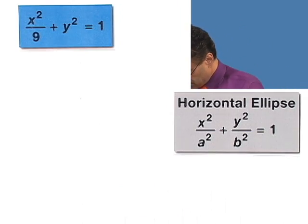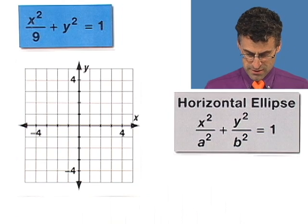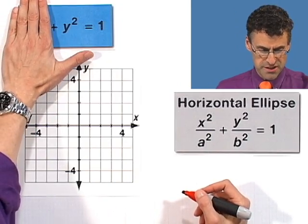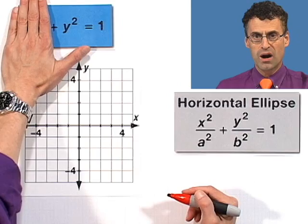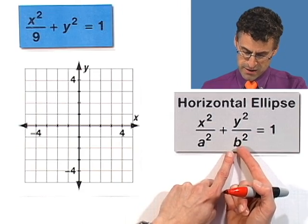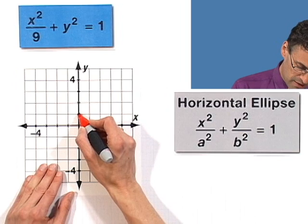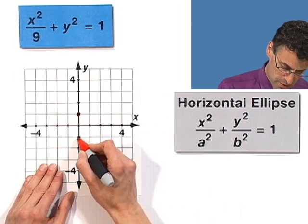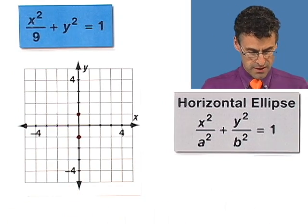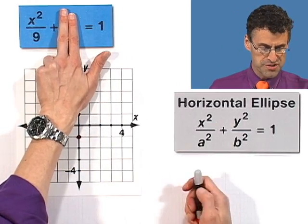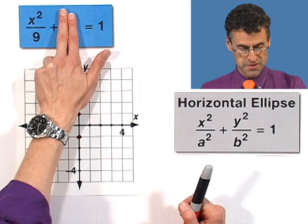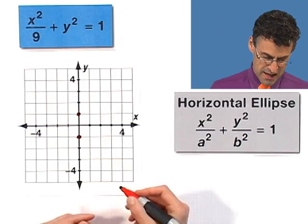If we want to actually graph it, here's how I do it. If X equals 0, then I have Y squared equals 1, which means Y equals plus or minus 1. That corresponds to the values for B — B squared equals 1, so B equals 1, giving intercepts at 1 and negative 1. And if Y were 0, then X squared over 9 equals 1, so X squared equals 9, meaning X equals plus or minus the square root of 9, or plus or minus 3 — which is plus or minus A.